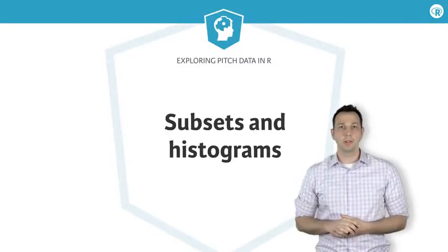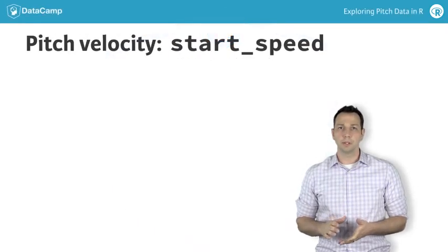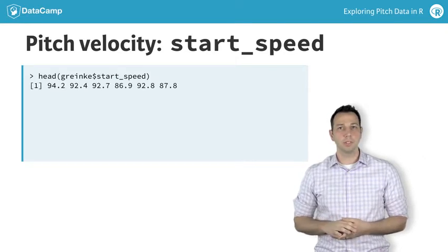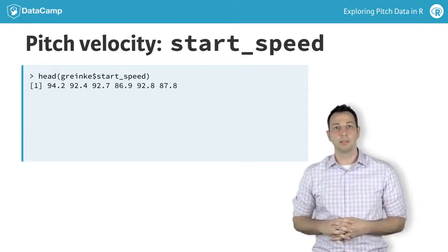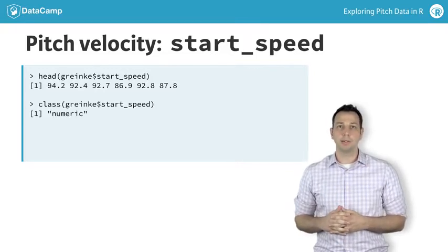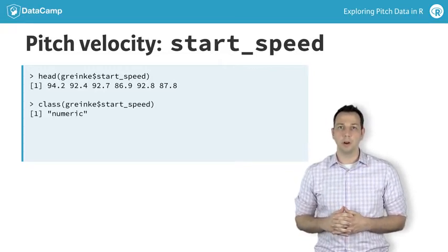Now that you've prepared the dates appropriately, it's time to start exploring your data. You'll begin by exploring the start_speed variable. This variable indicates the velocity of each pitch thrown as it leaves the pitcher's hand. It's important to note that the velocity measurements are in miles per hour, and the variable is entered as a numeric scale variable in R.